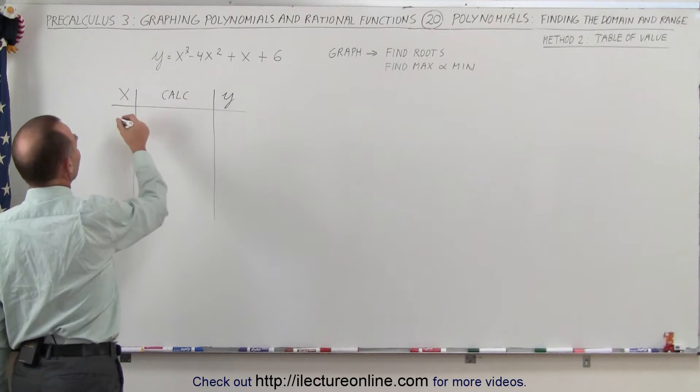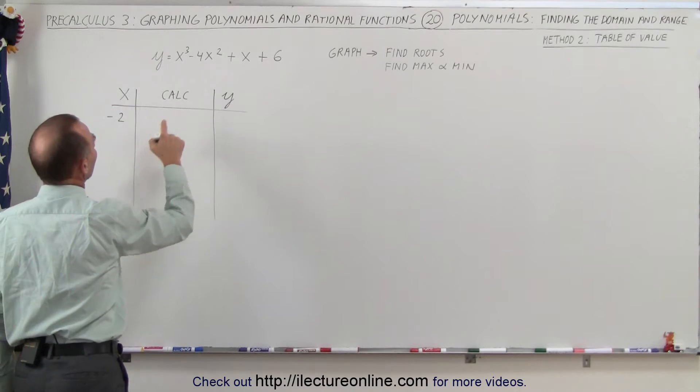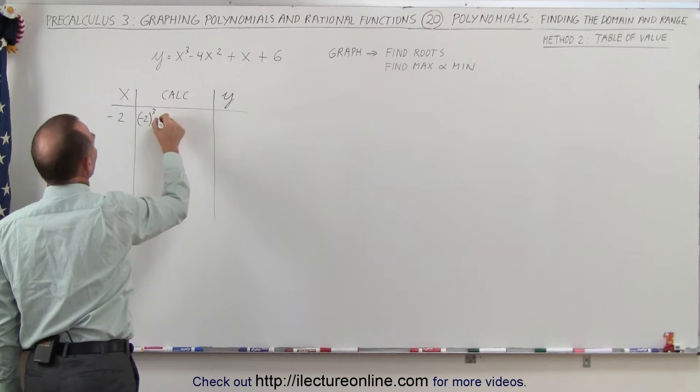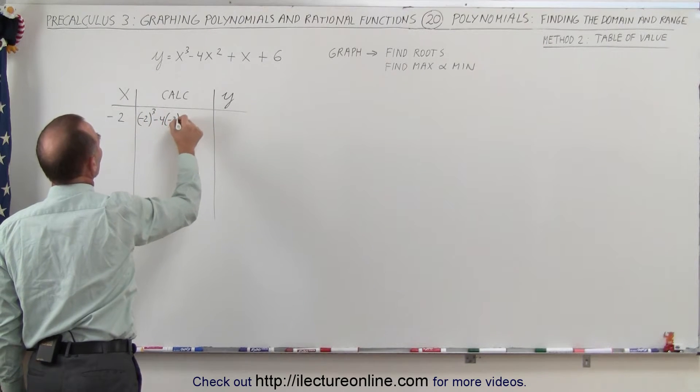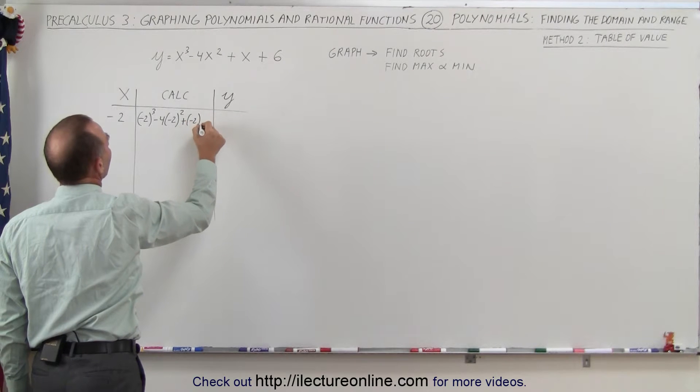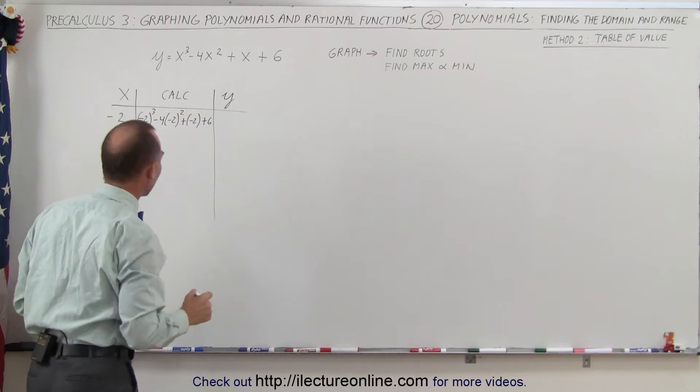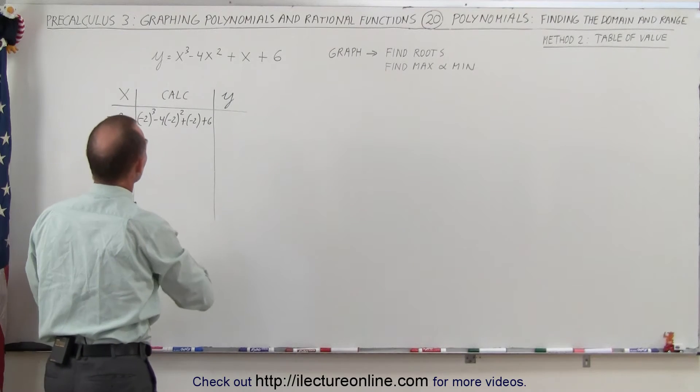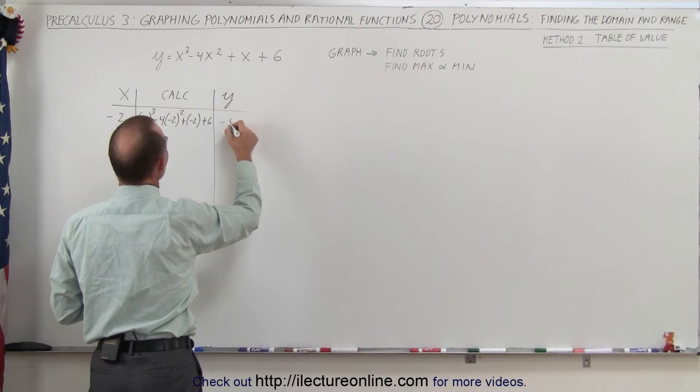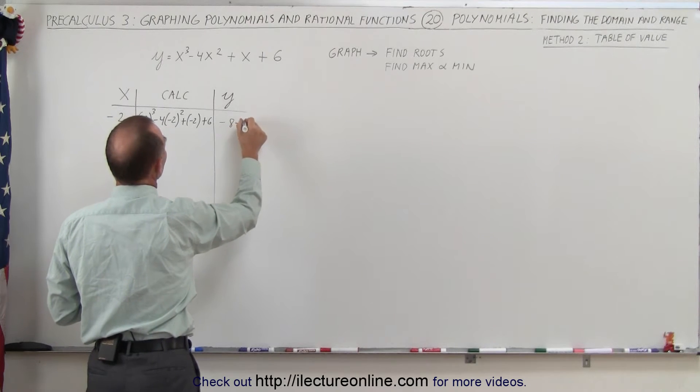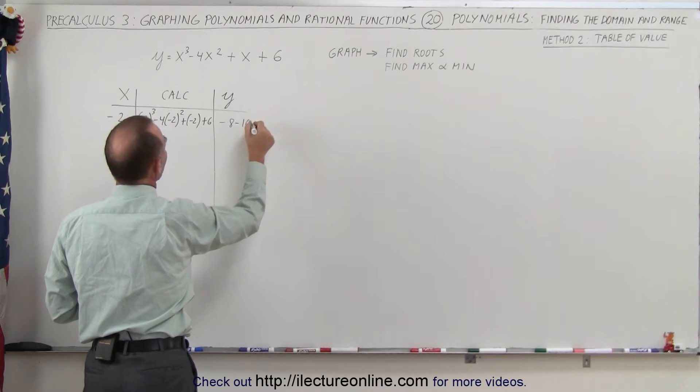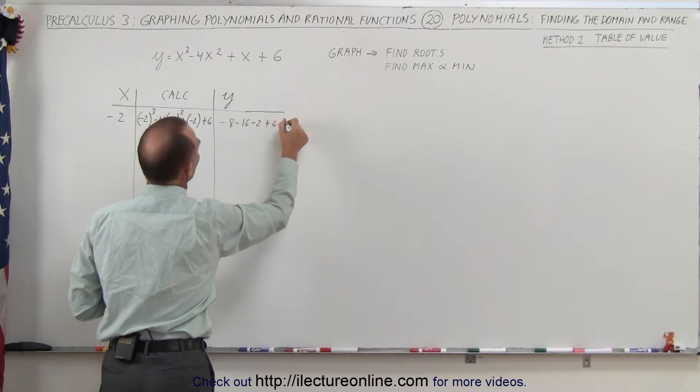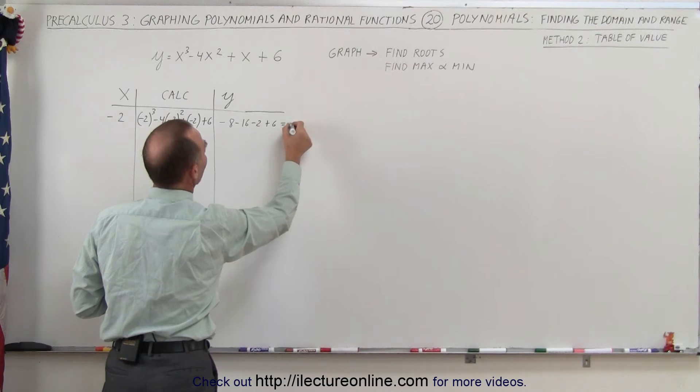So let's start with maybe negative 2. X equals negative 2. When we plug that in there we get negative 2 cubed minus 4 times negative 2 squared plus negative 2 and plus 6. Let's see what Y is equal to. So it would be minus 8, that would be 4 times minus 4, that's minus 16, that would be minus 2 and plus 6. So that's minus 26 plus 6 which is equal to minus 20.